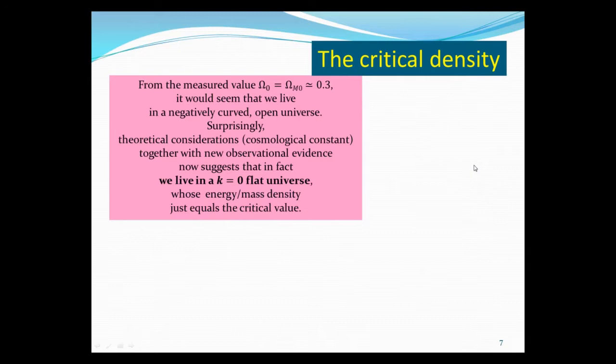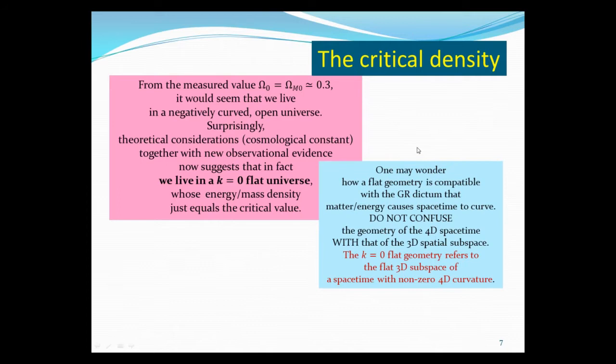Now, from the measured value of Ω₀, which for the mass is about a third, it would seem that we live in a negatively curved, open universe. Surprisingly, theoretical consideration, in particular, we're talking about cosmological constant, together with the new observational evidence, now suggests, in fact, we live actually in a case of a flat universe, whose energy mass density equals exactly the critical density.